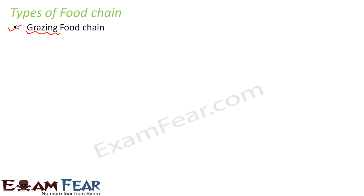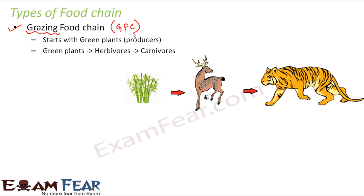The grazing food chain — grazing means to eat, normally used when an animal feeds on grass. The grazing food chain starts with green plants, the producers, since many animals are dependent on plants for food. Often written as GFC, it begins with green plants, followed by herbivores, which are in turn followed by carnivores.